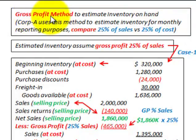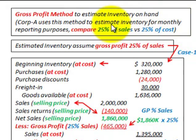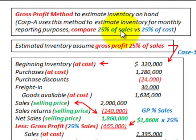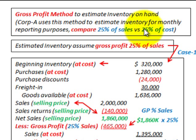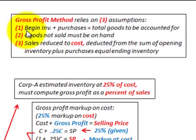We're going to be going through an example using the gross profit method to estimate inventory on hand, or ending inventory. Corporation A will use this method for monthly reporting purposes on an interim basis. We're going to compare the percent of sales method versus the percent of cost method, looking at an example of 25% of sales versus 25% of cost.